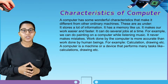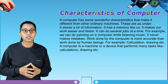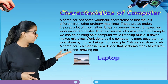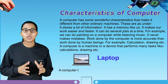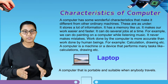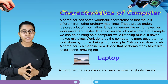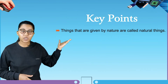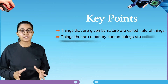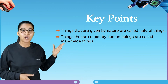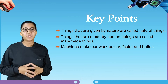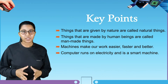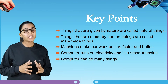A computer is a machine or device that performs many tasks like calculation, drawing, etc. A laptop is a computer that is portable and suitable when anybody travels. Key points from this chapter: things given to us by nature are called natural things; things made by human beings are called man-made things; machines make our work easier, faster, and better; and a computer runs on electricity and is a smart machine that can do many things.